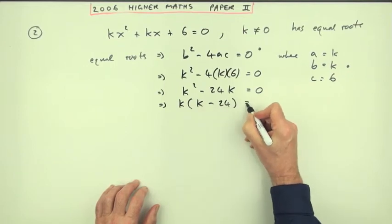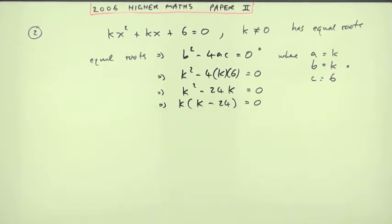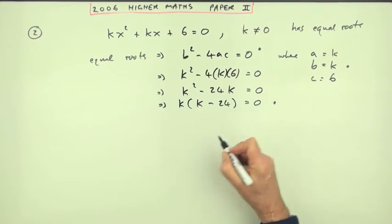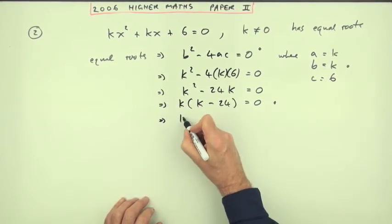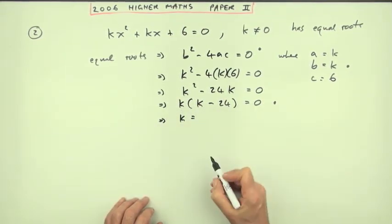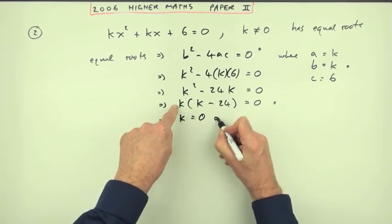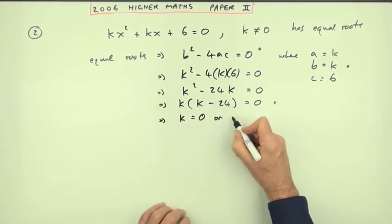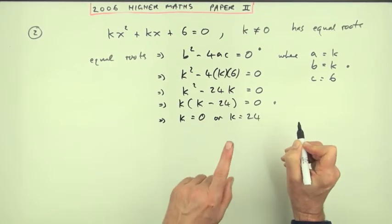Now you end up with two answers. If two things multiply to give zero, then either this thing is zero or this bracket is zero, in which case k is 24. Either k equals zero or k equals 24. You don't get your mark yet.